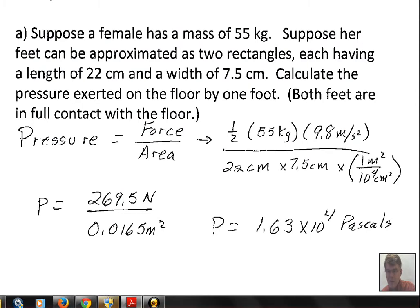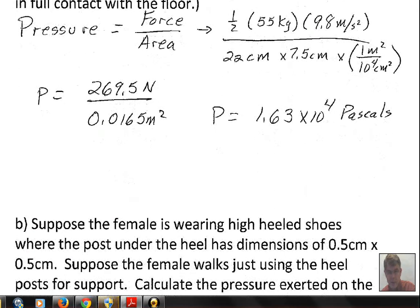The pascal is a very small unit of pressure. There's essentially 10 to the fifth pascals in one atmosphere of pressure at the bottom of the Earth's atmosphere. So this is not a large pressure, 1.63 times 10 to the fourth pascals.